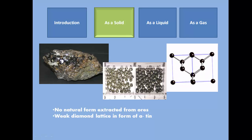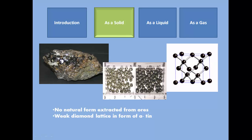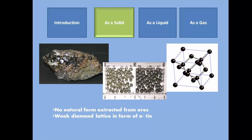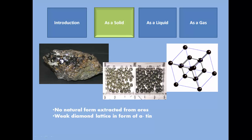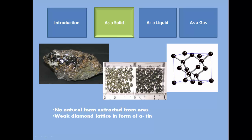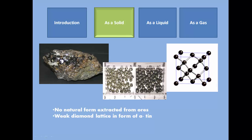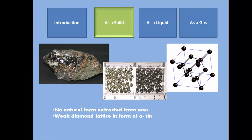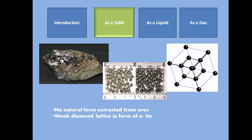At room temperature, tin is a solid. The forms of beta tin and alpha tin differ as alpha tin has a weak diamond lattice structure that causes it to break down at temperatures below 13 degrees Celsius. Tin does not occur in a natural form. It must be extracted from ores.